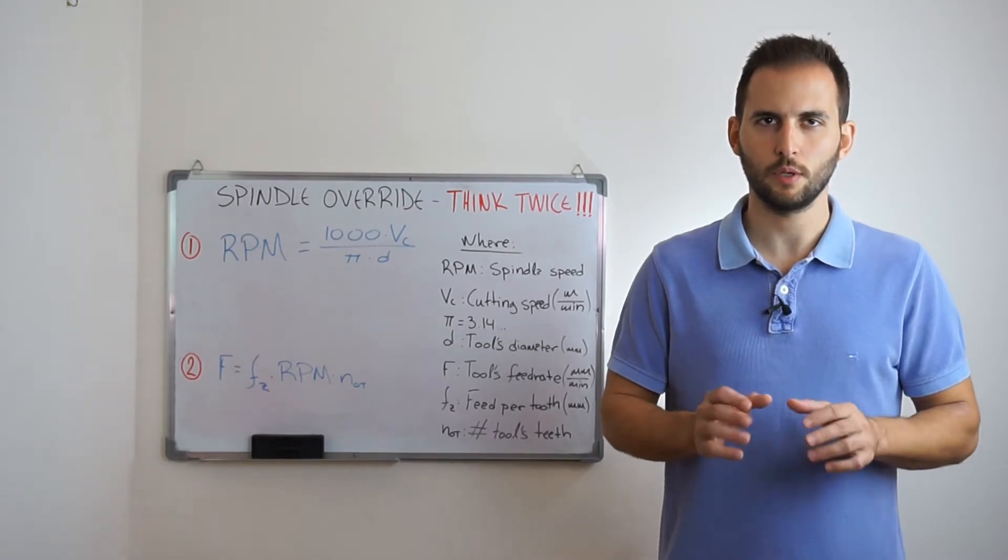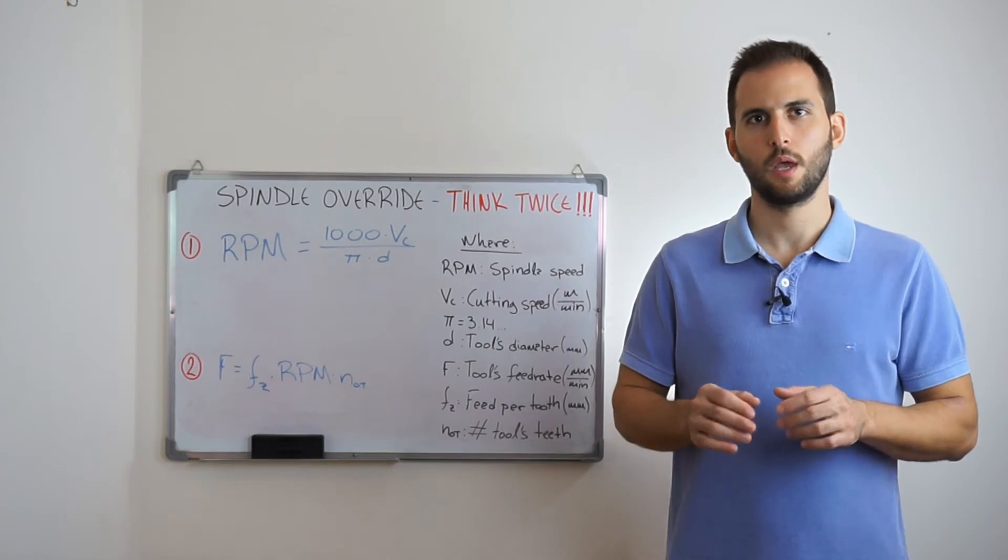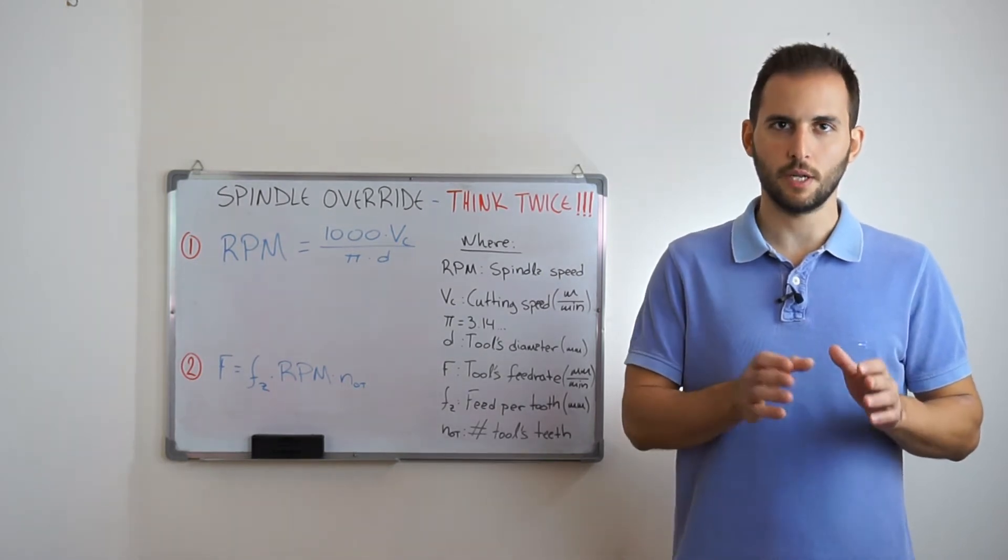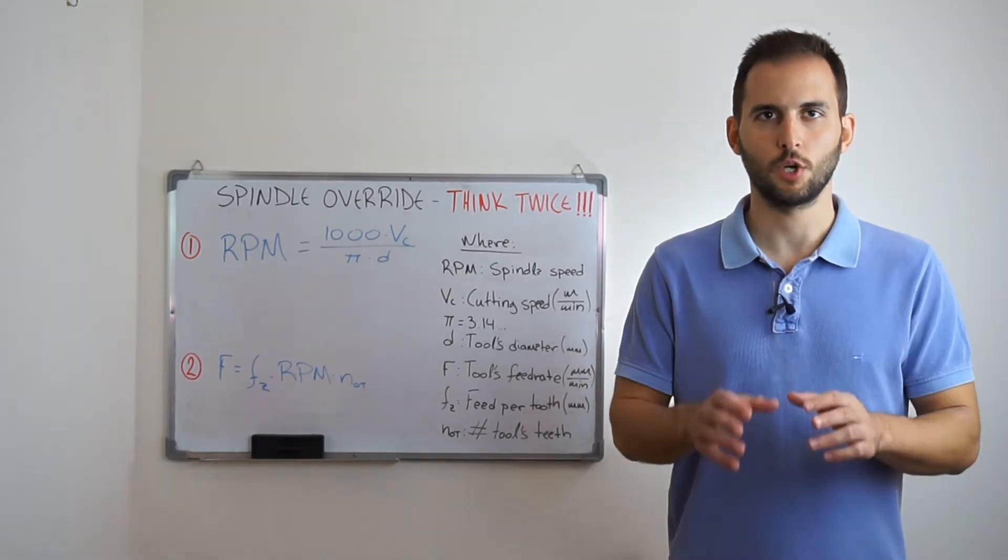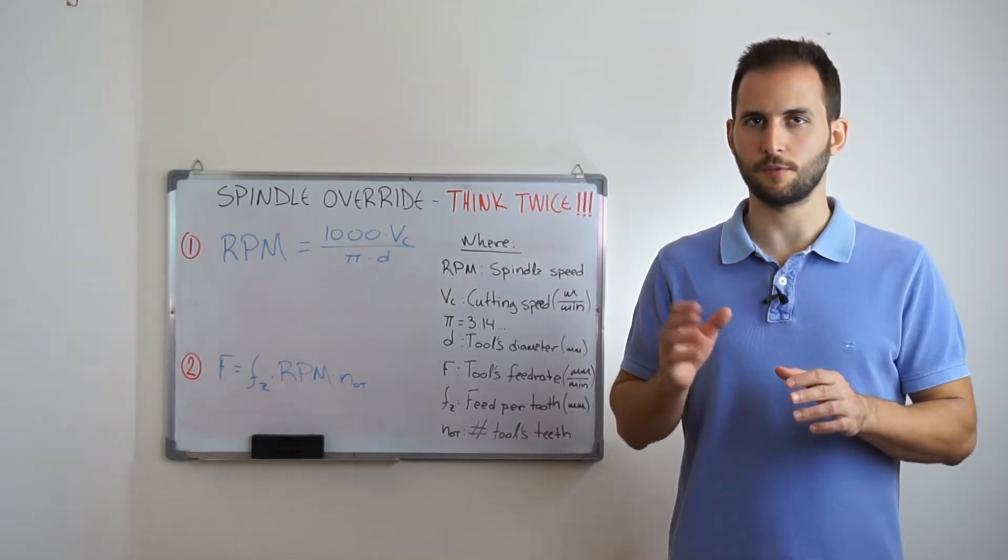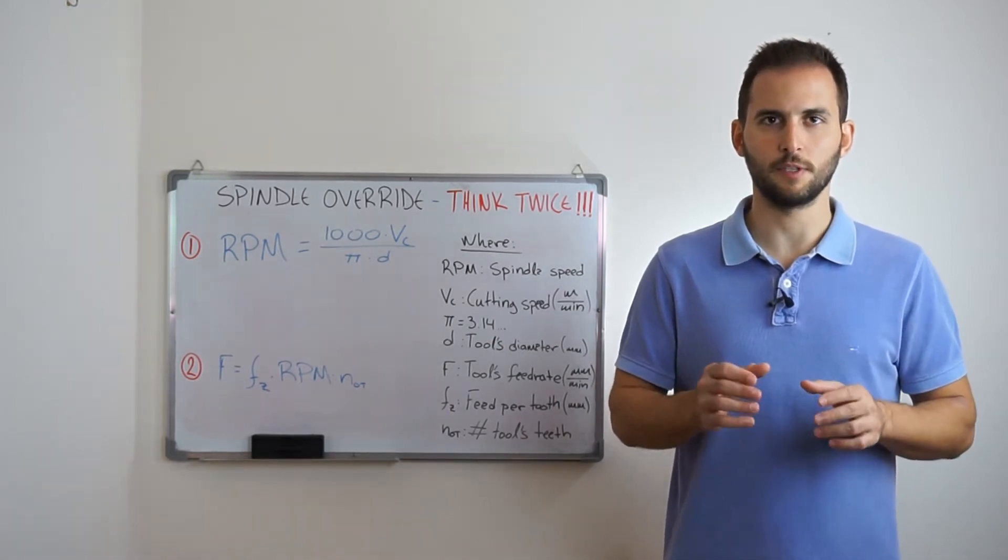Given that now we all know about the basics of the definition of cutting speed and feed per tooth, here you can see the two basic formulas that relate these two parameters to the programmable feeds and speeds. So in order to calculate the spindle speed we use the first formula, and then given the result we use the second formula to calculate the programmable feed rate.